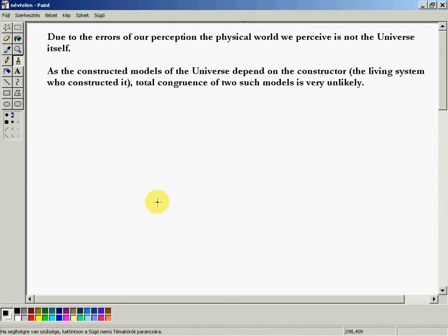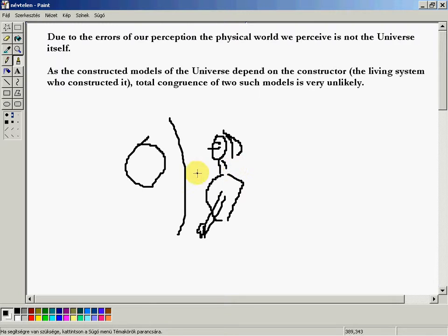What do I mean by this? You might remember that we have the physical universe, and of course we are parts of it. But when we are perceiving it, there is a boundary. Let's try to draw a head. This is ourselves. I am not a Picasso. So we are looking and trying to perceive the physical world.